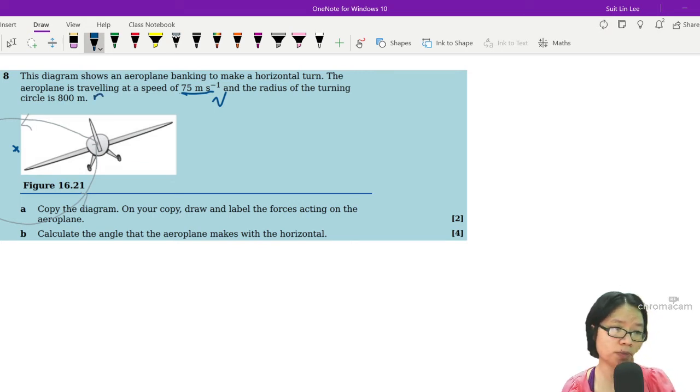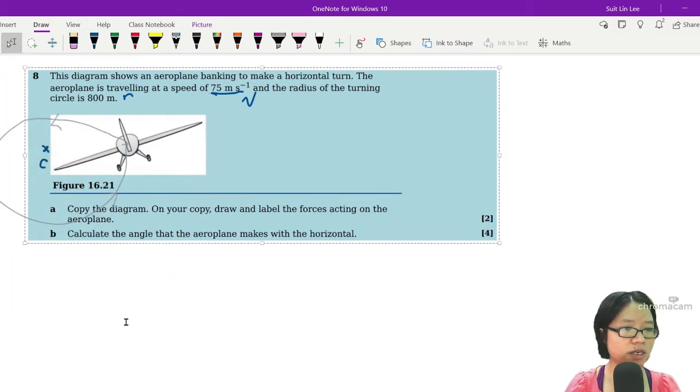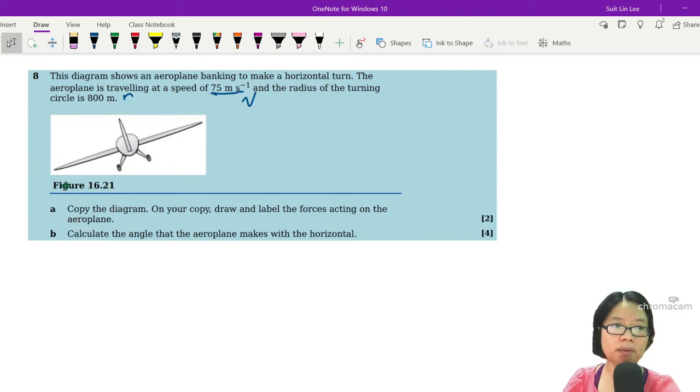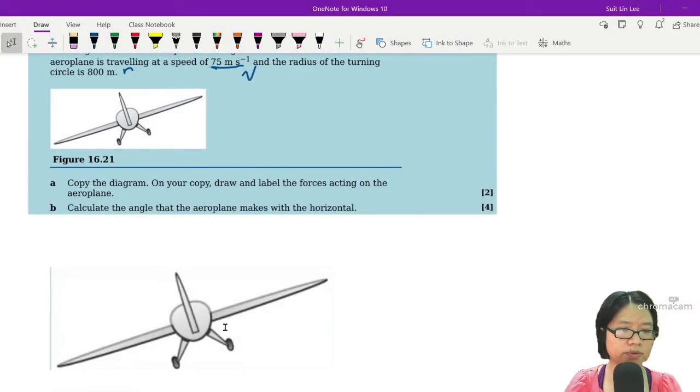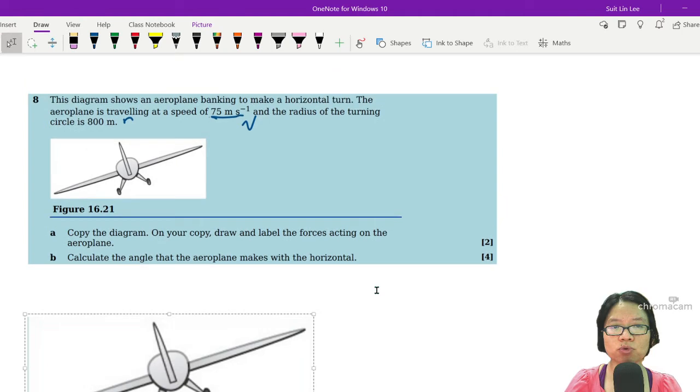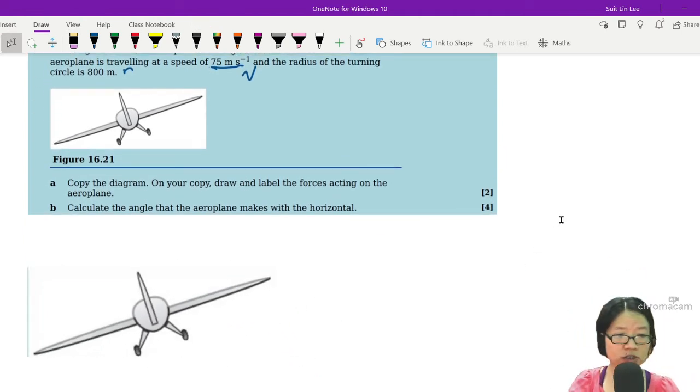The aeroplane will always tilt towards the direction that is turning, so the center of your circle is actually here. It says copy the diagram and on the diagram draw and label the forces acting on the aeroplane. I will crop it and make it bigger. So first things first, we will draw weight because the weight is easiest to draw. Weight is always vertically downwards, mg.